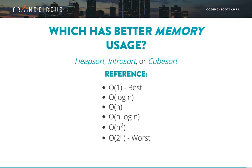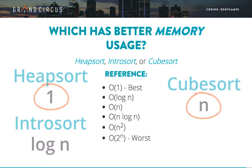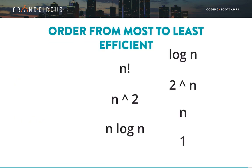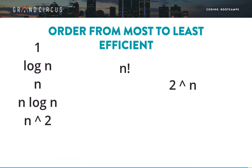Finally, which has a better memory usage complexity: Heapsort, Introsort, or Cubesort? Heapsort is the best — order 1 is the best possible complexity. The worst of these is Cubesort because N is worse than log N. For a final exercise, put all the complexity expressions in order from most efficient to least efficient: 1 is the most efficient, then log N, N, N times log N, N squared, 2 to the power N, and the very worst is N factorial.